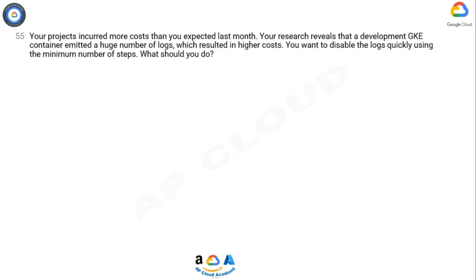Question. Your projects incurred more costs than you expected last month. Your research reveals that a development GKE container emitted a huge number of logs, which resulted in higher costs. You want to disable the logs quickly using the minimum number of steps. What should you do?